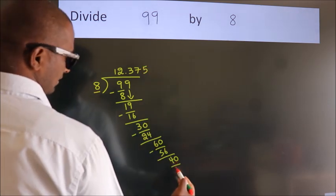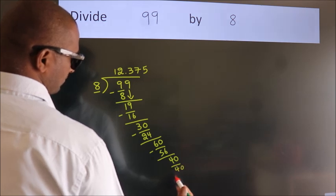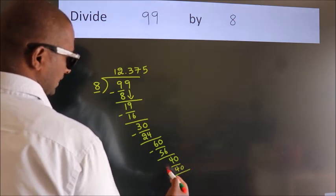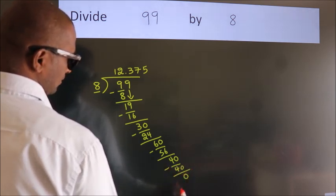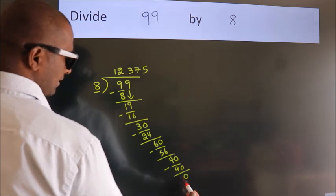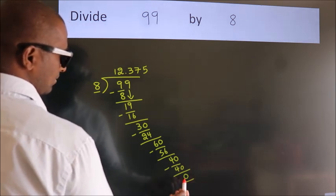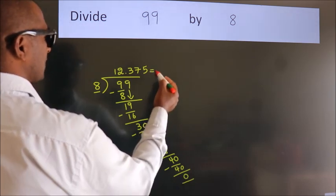8 fives, 40. Now, we subtract. We get 0. Here, we got remainder 0. So, this is our quotient.